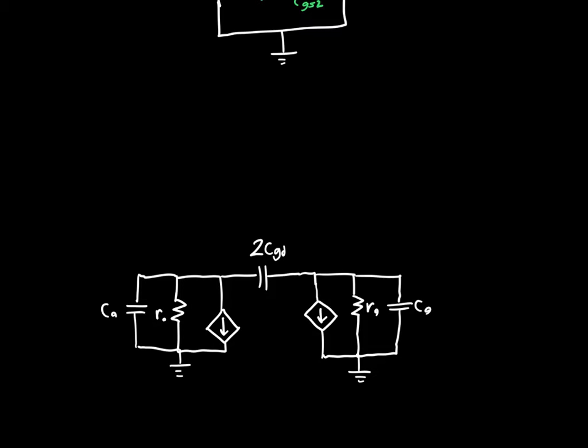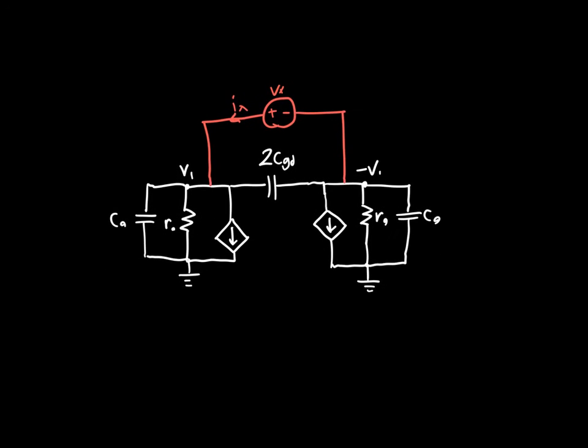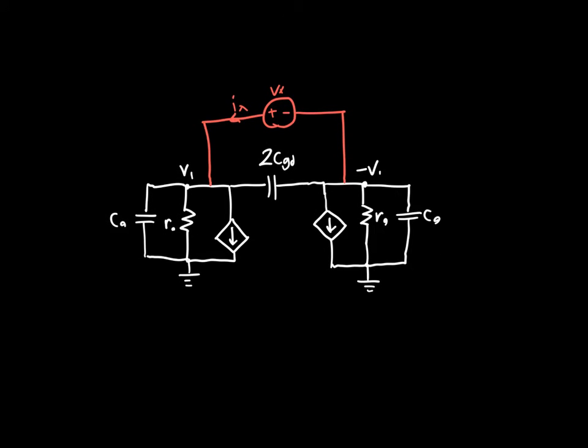So we said that if we apply a voltage source Vx, and there's a current coming out of it Ix, we said that because the circuit is purely anti-symmetric, this node V1 must be the minus of this node, minus V1. But we've got this annoying capacitance here, 2CGD. And that kind of makes it more difficult to analyze because the circuit's still anti-symmetric, but we've got to worry about current flowing through here and everything. So it would be nice if we could just get rid of that.